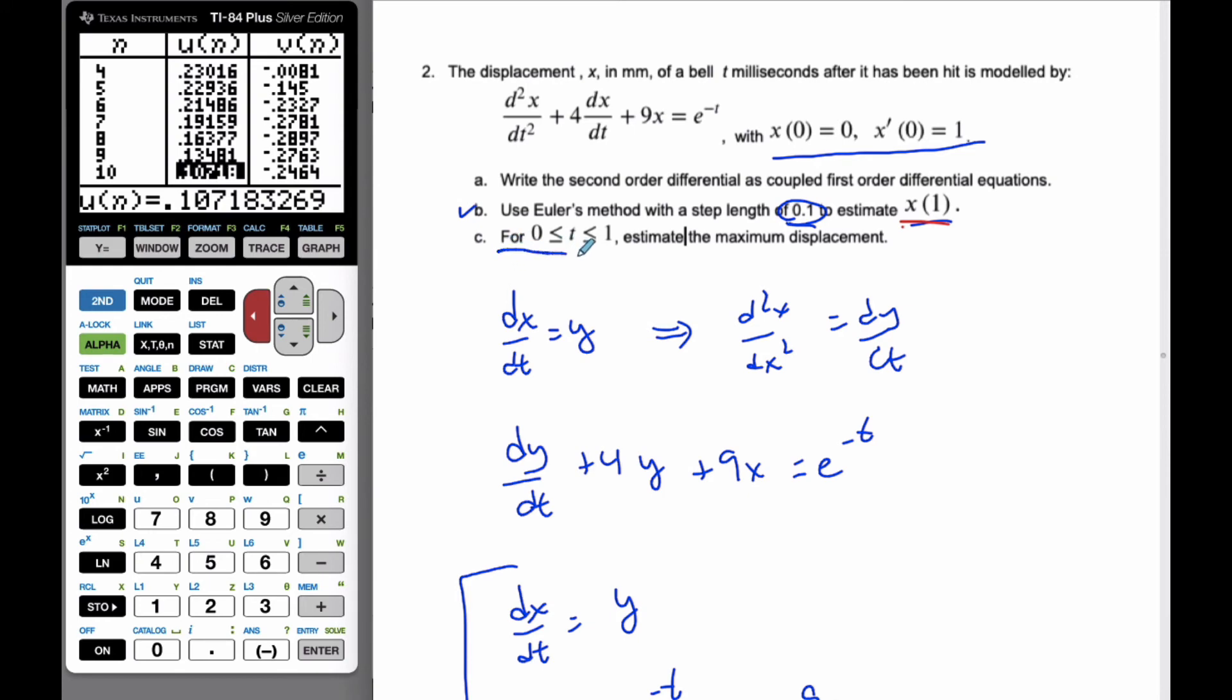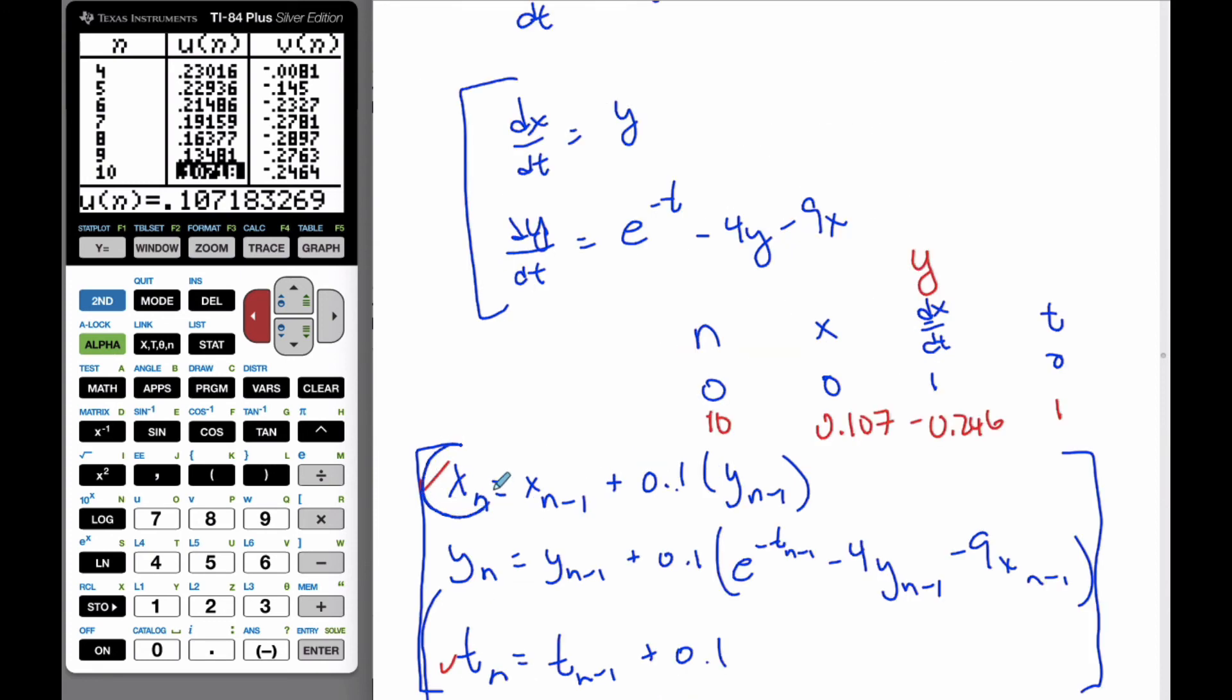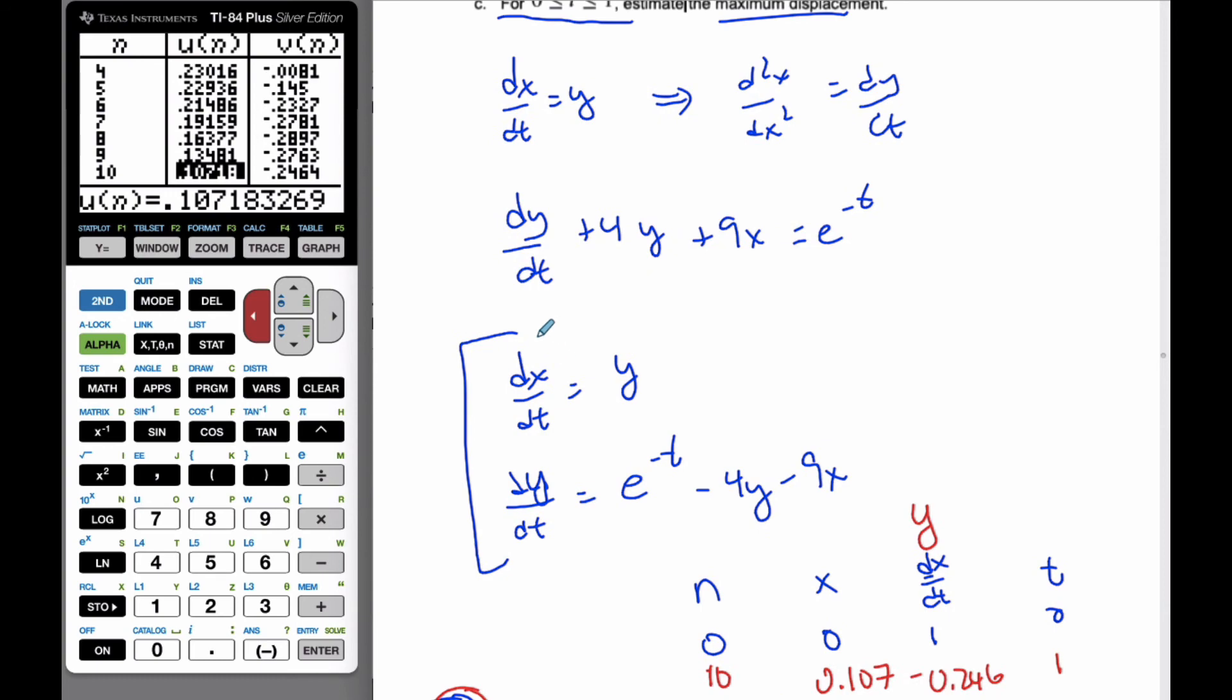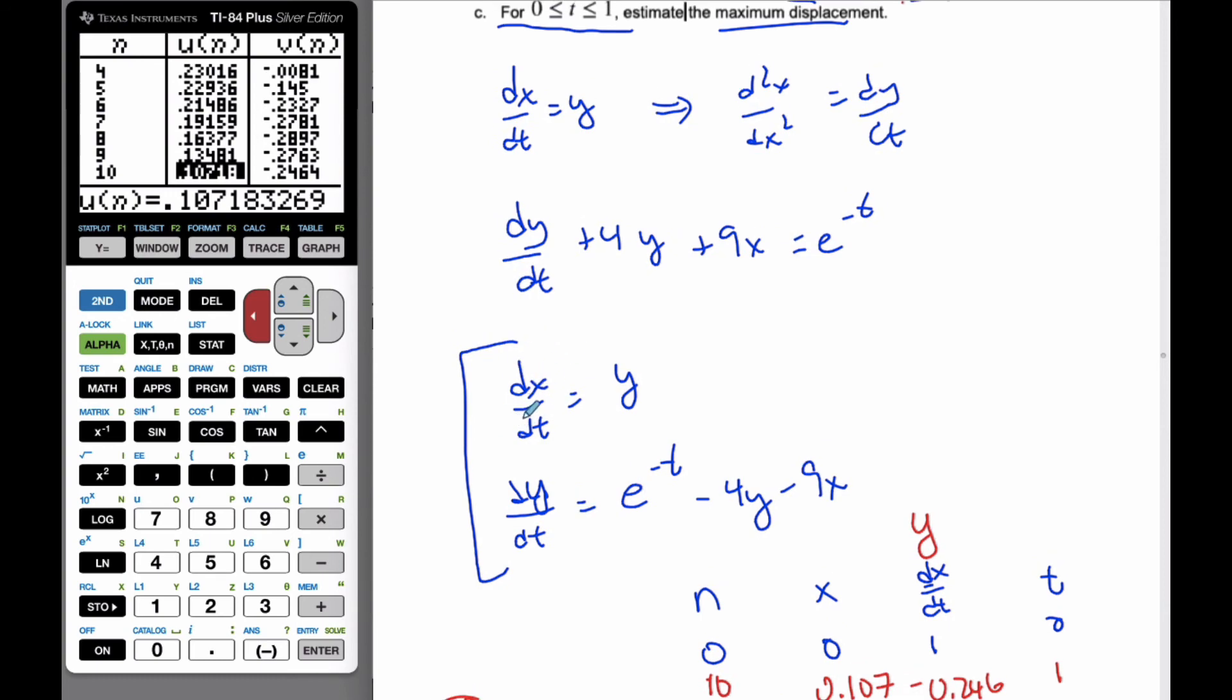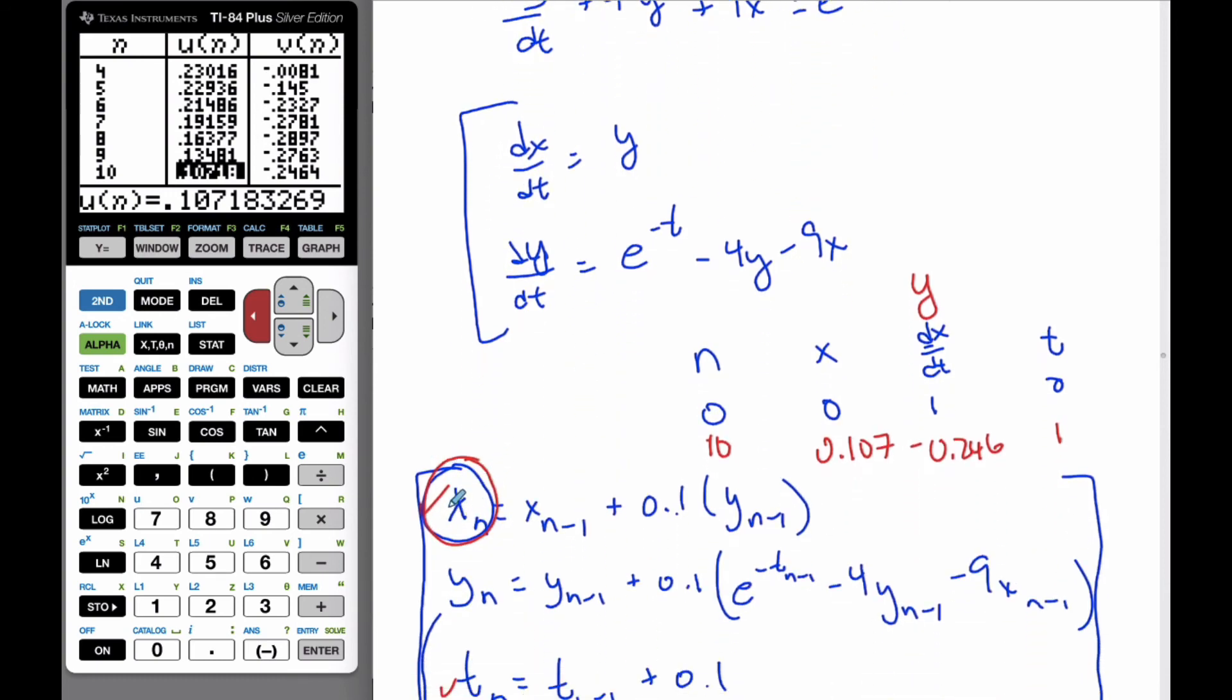Now, then it says, on this interval for 0 between t, t is between 0 and 1, estimate the maximum displacement. Well, x is displacement. And so the maximum displacement, xn. Because we know this is undoing these derivatives to find out an approximation for what they are.